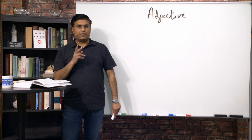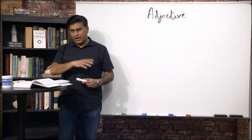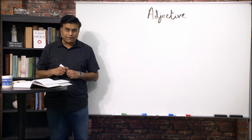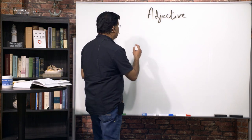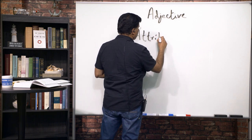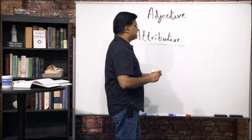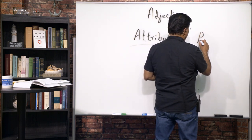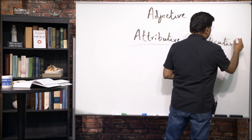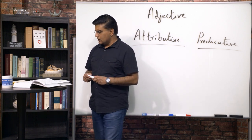Now there are two primary uses of an adjective that we will come back to towards the end of this video. The first is what's known as the attributive adjective, and the second is the predicative adjective. So you have two different kinds: the attributive and the predicative.